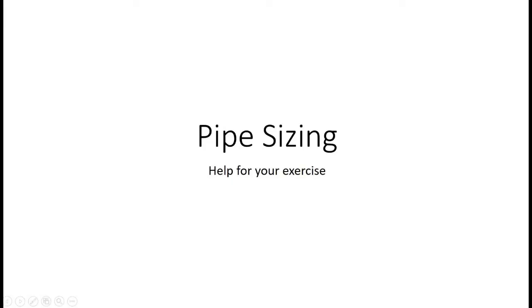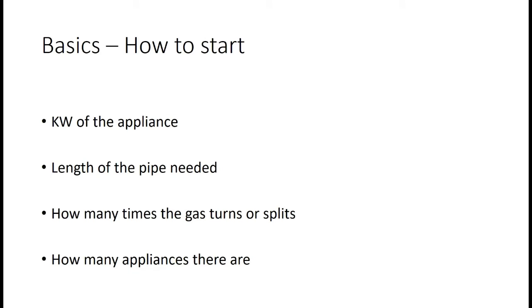Pipe sizing: the basics. In order to pipe size, you need to know four basic elements of the installation. You need to know the kilowatts of the appliance, the length of the pipes that are needed, how many times the gas turns or splits, and how many appliances there are in the installation.